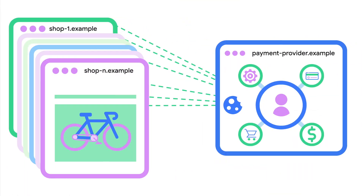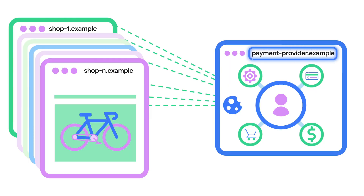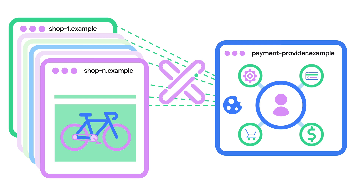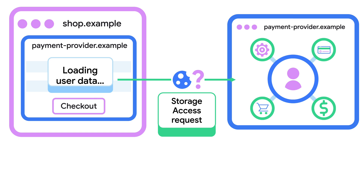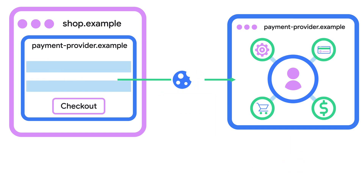But what if you distribute a payment solution that other companies rely on, just like in our paymentprovider.example? There are multiple options here. Let's start with the Storage Access API. If the paymentprovider.example widget is embedded on shop.example and third-party cookies are blocked, it doesn't have access to its own unpartitioned storage by default. With the Storage Access API, the widget can prompt the user to grant storage access. With user permission, the paymentprovider.example widget will load as expected.